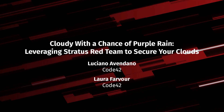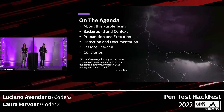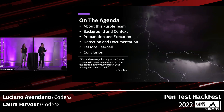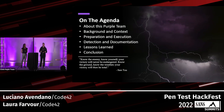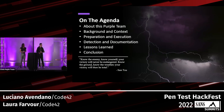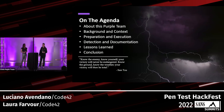On the agenda, we're going to talk about a really cool AWS pen testing tool that we found earlier in the year and have been using for a lot of purple teaming. I'll give background and context, preparation and execution — downloading the binary, setting up a good test environment — some detection and documentation, and lessons learned as we work through the purple team exercises.